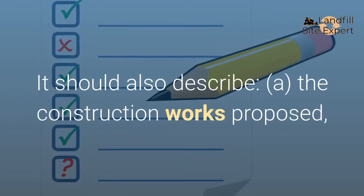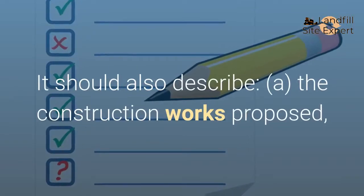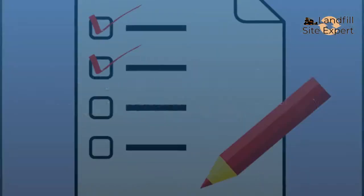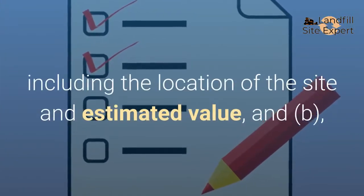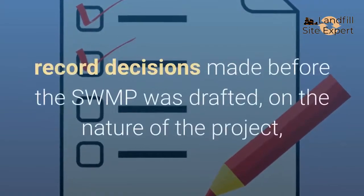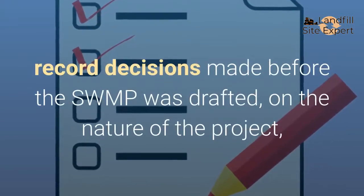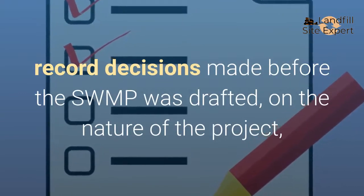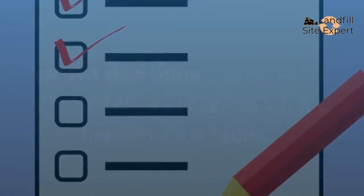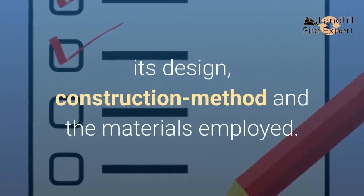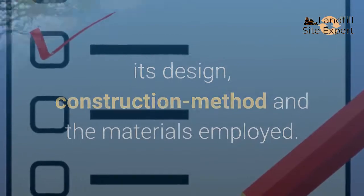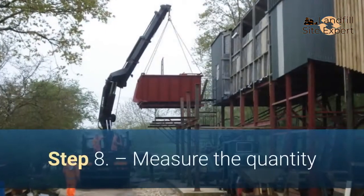It should also describe: a) the construction works proposed, including the location of the site and estimated value; and b) record decisions made before the SWMP was drafted on the nature of the project, its design, construction method and the materials employed.